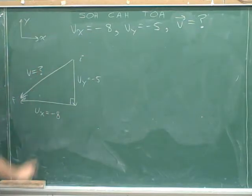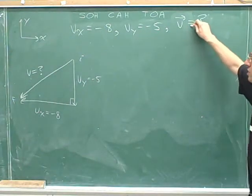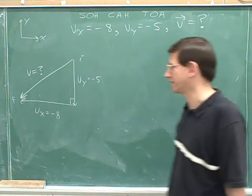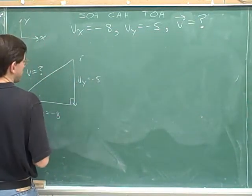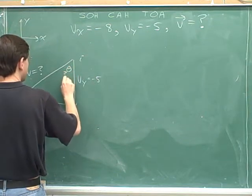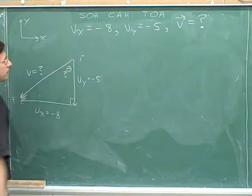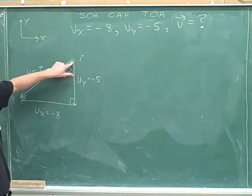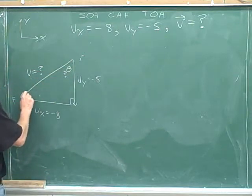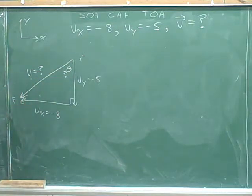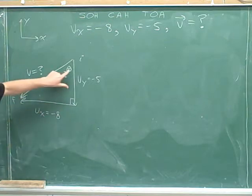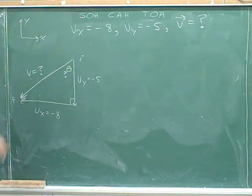One thing we've got to do is find the magnitude of that overall vector. This question is also asking us to indicate the direction of the overall vector. It would be natural to find this angle, which we could label theta. It's more usual to find the angle at the tail of the vector, so let's stick with that.